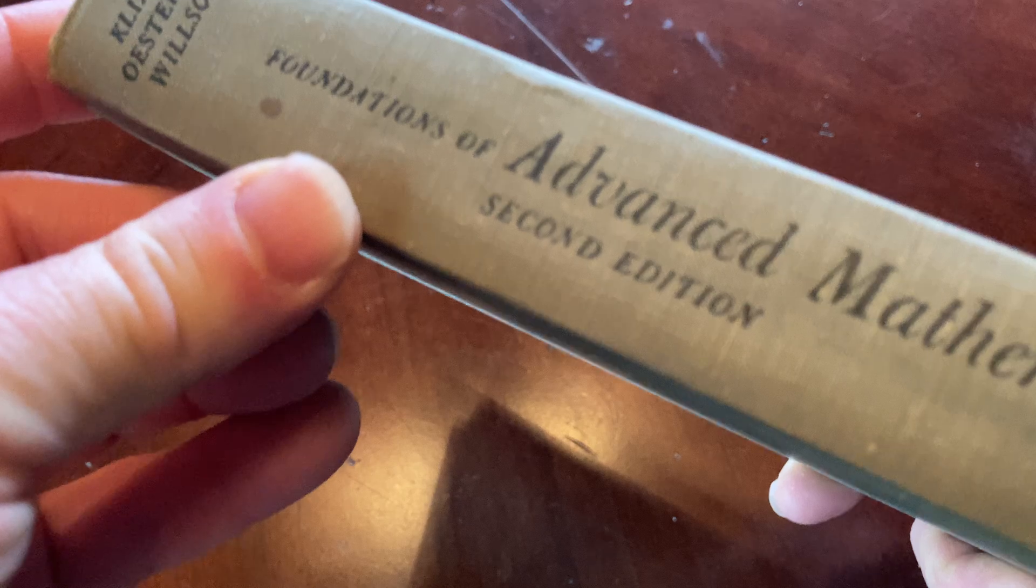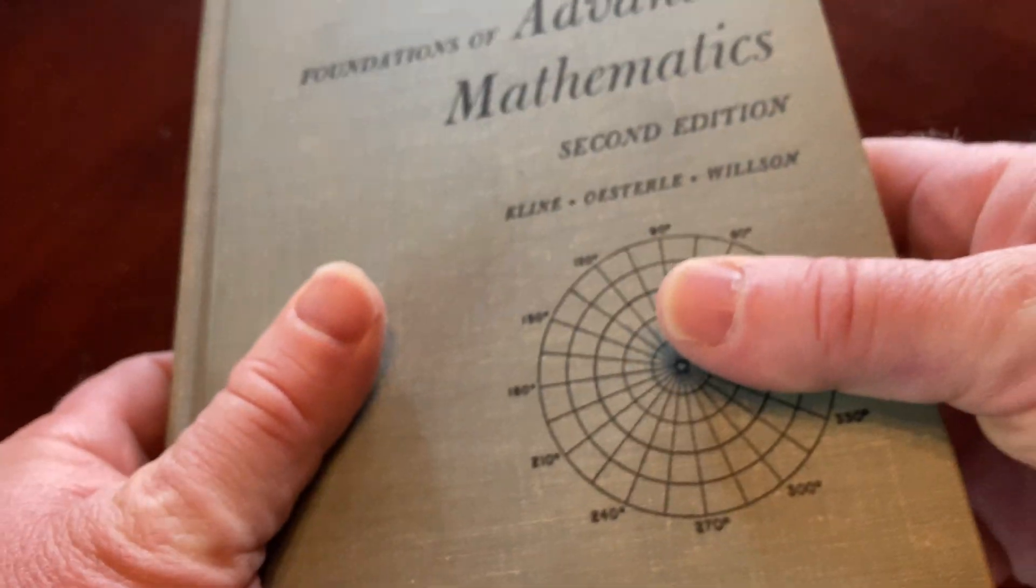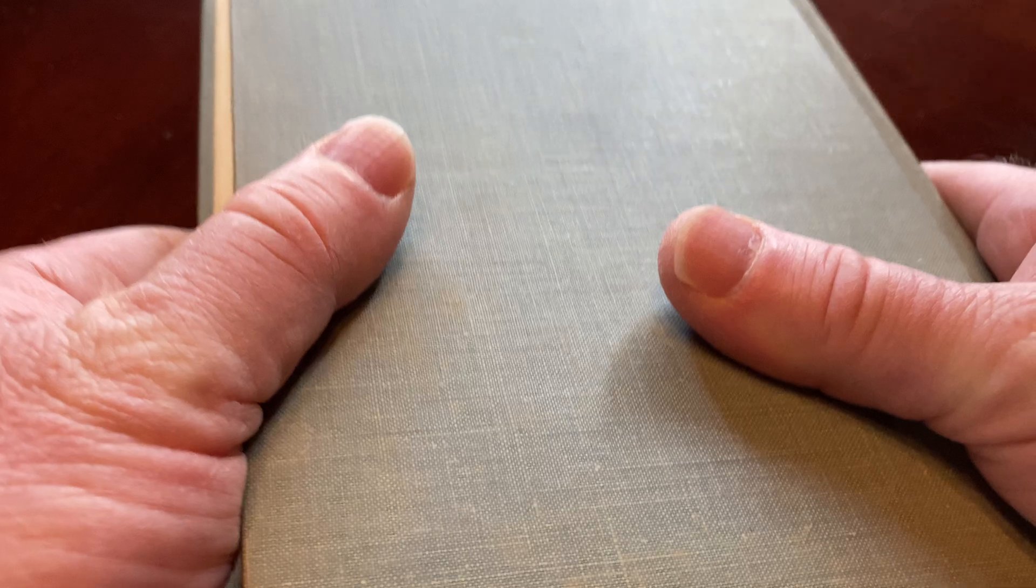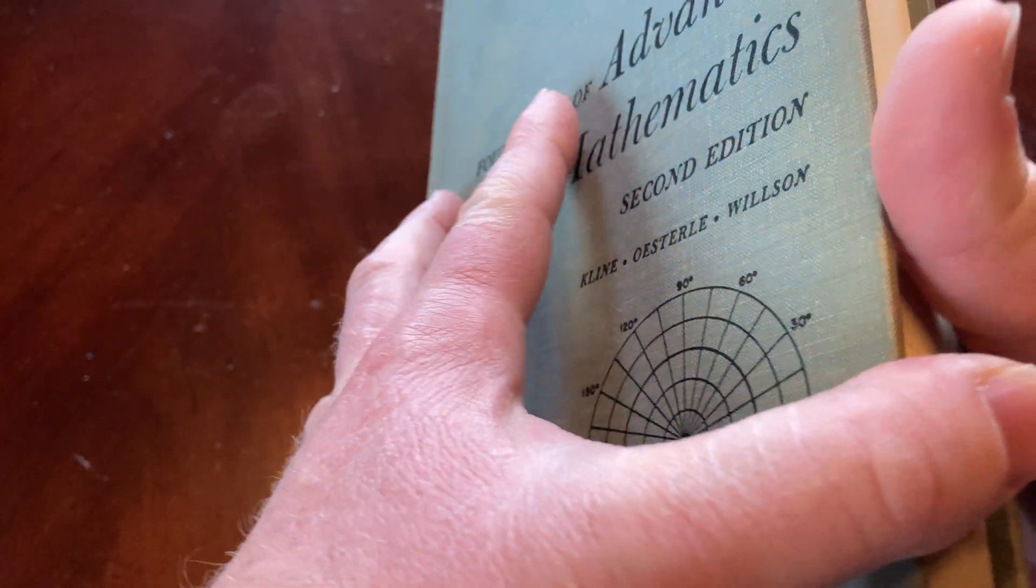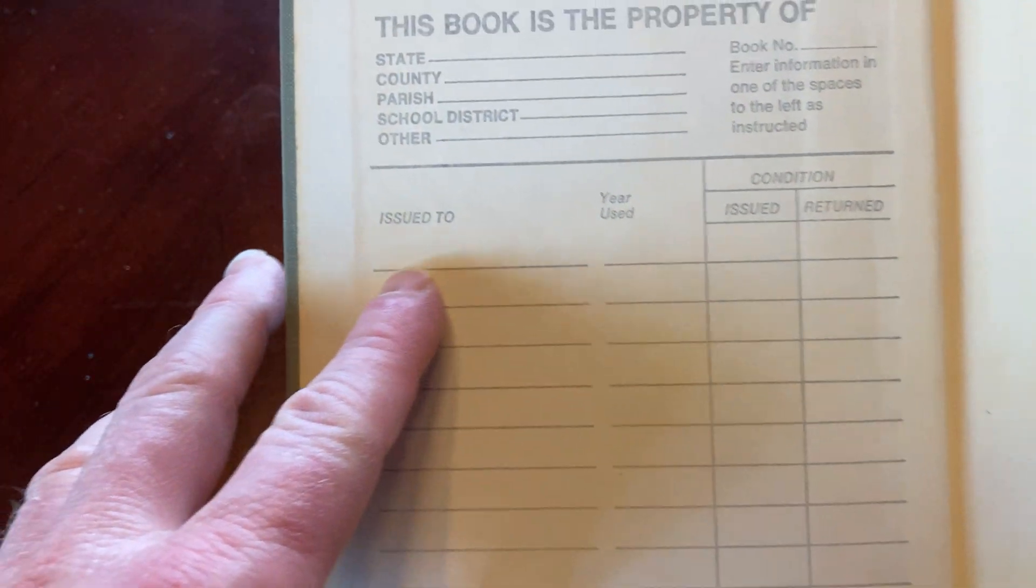Just a really good-looking book. Second edition, American Book Company. In this video, we're going to take a look at this book so you can see what it's about. So let's go ahead and open it up. It looks like it has some information here to indicate that perhaps it was part of a school, so it was maybe used in high school.